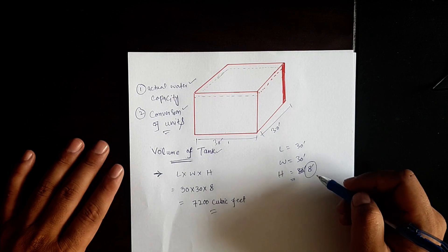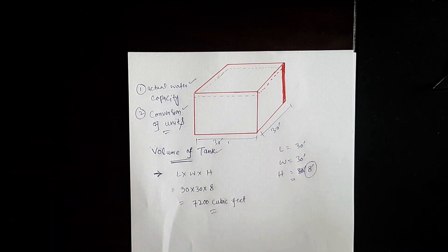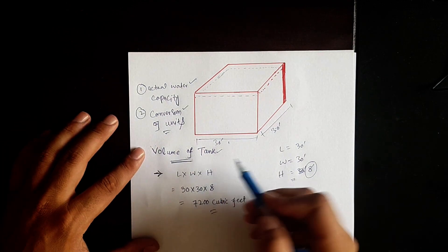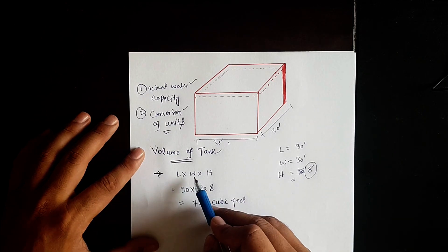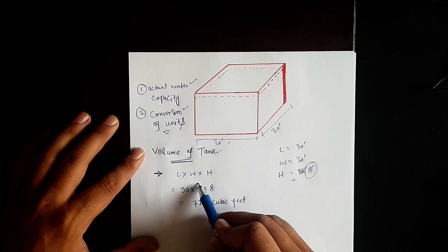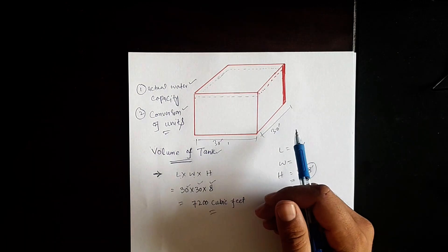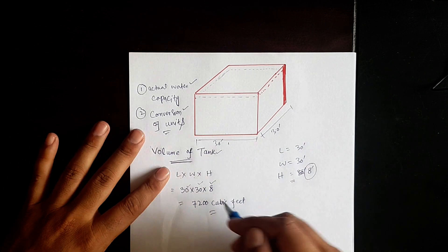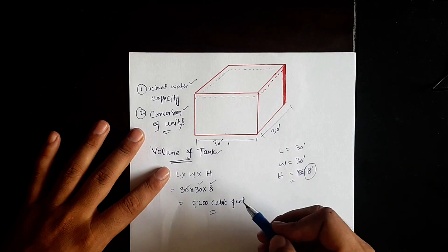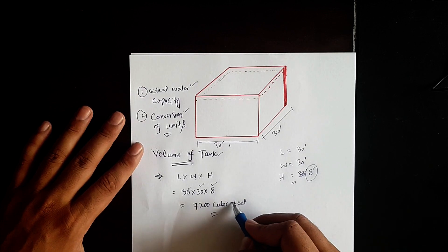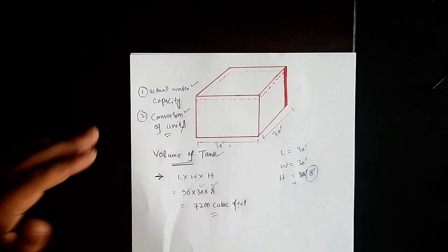This is a simple example of a water tank. The volume of the water tank in cubic feet will be length × width × height, that is 30 × 30 × 8 feet, and its volume will be 7200 cubic feet.